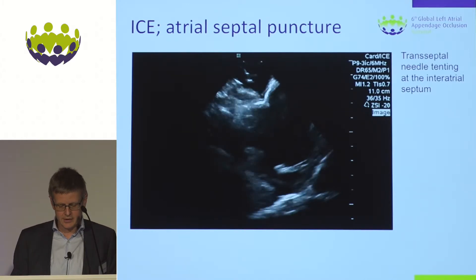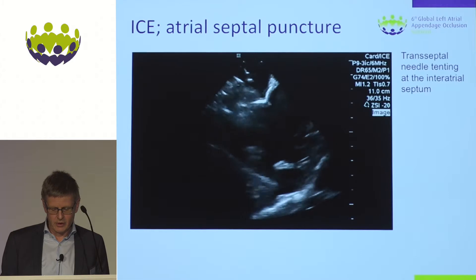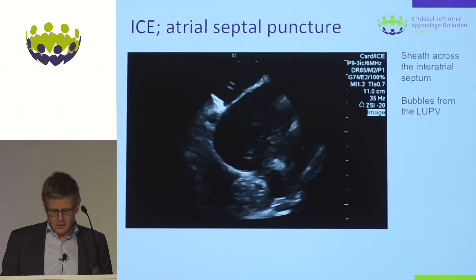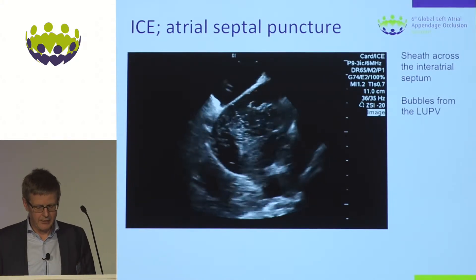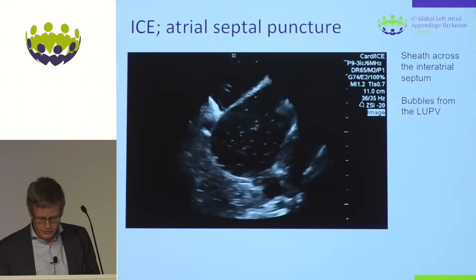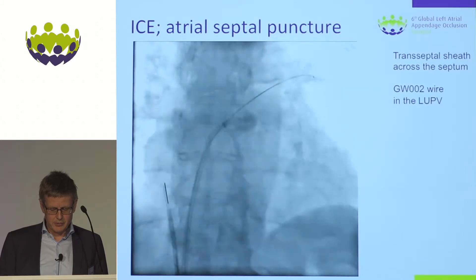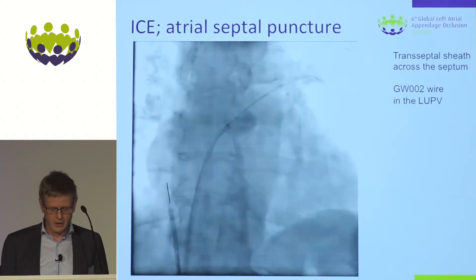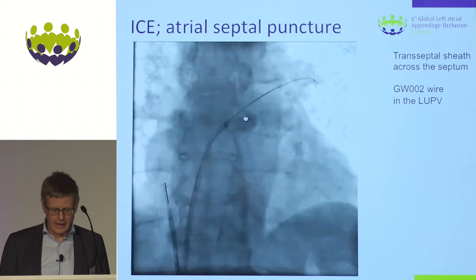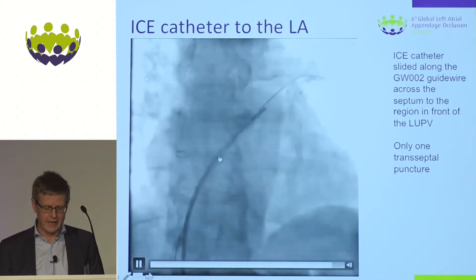It is easy to see when you are on the septum with your needle and confirm safe tenting for a safe transseptal puncture. You can rotate around to look at the anterior aspect or use fluoroscopy to confirm posterior orientation. Once the transseptal sheath is in the left atrium — confirmed by saline injection creating bubbles coming from the left upper pulmonary vein — the next step is to advance the ICE probe into the left atrium using the guide wire as a pathway, sliding the ICE catheter through the same defect created by the transseptal puncture.